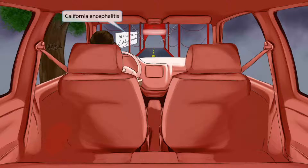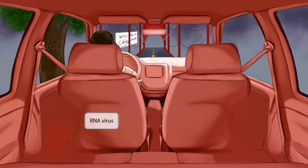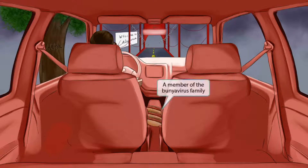This scene takes place inside a car of a family going on vacation to California. You can see they're about to pass the Golden Gate Bridge, and there is a sign that says 'Welcome to California.' All of these references to California should help you remember that this image is about California encephalitis. Notice that we've made the interior of the car colored with a shade of red, to help you remember that it's an RNA virus.